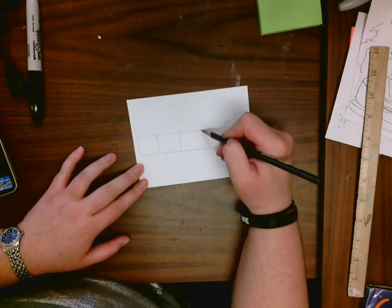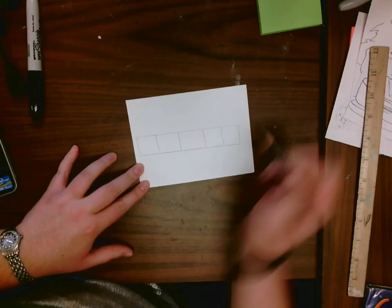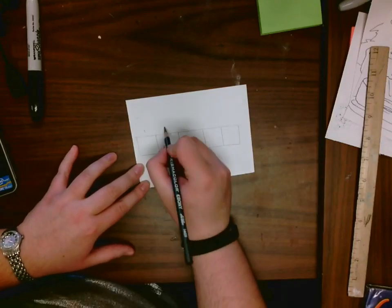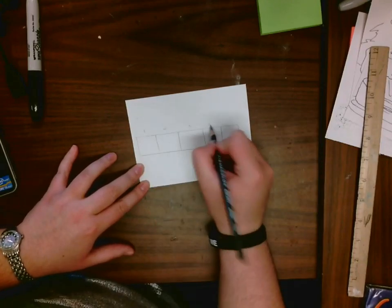And then divide that as evenly as you can into five different sections. One, two, three, four, five.